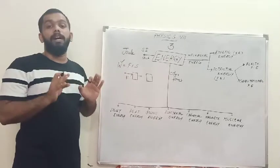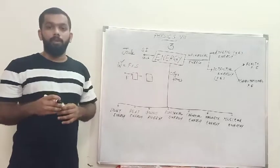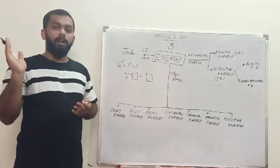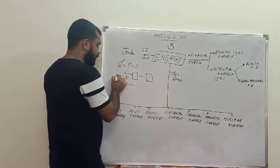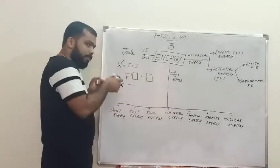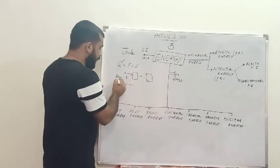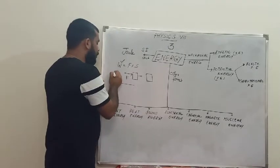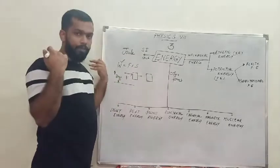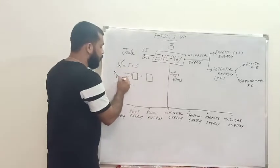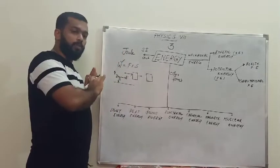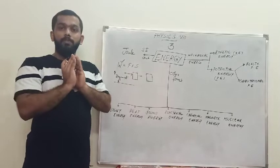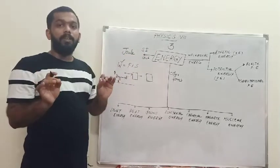For example, when you are carrying your school bag and traveling in a straight line, the bag has weight — the force by which the earth is attracting it — acting downward. You apply force upward on your shoulder to carry the bag, but the bag is moving in a straight horizontal direction. Since the force and movement are not in the same direction, we cannot consider that as work.